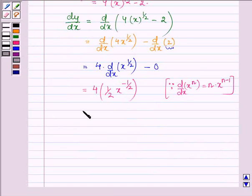This is further equal to 4/2 × 1/√x. Since 4/2 equals 2, we have 2/√x.